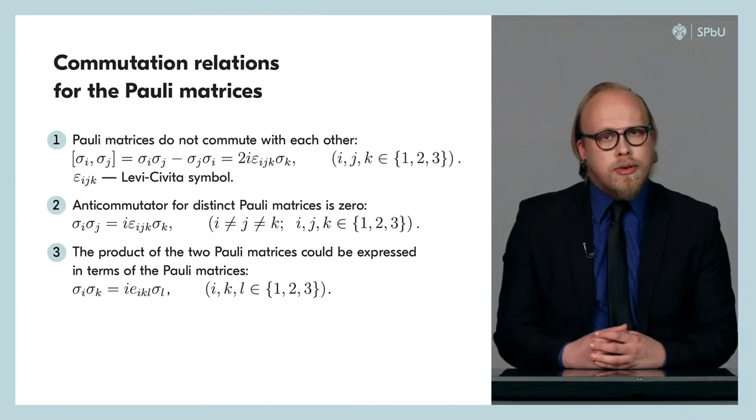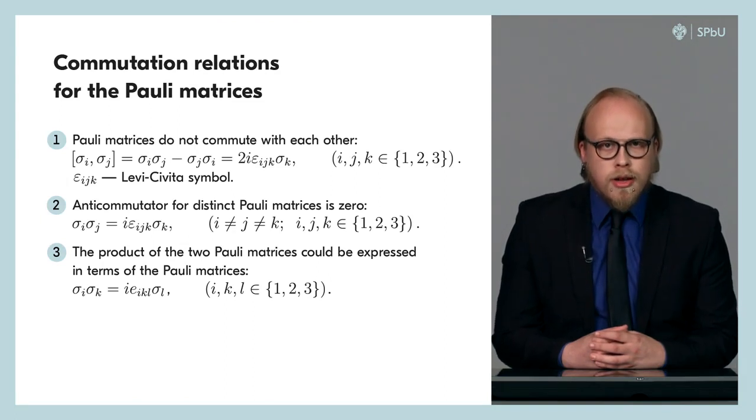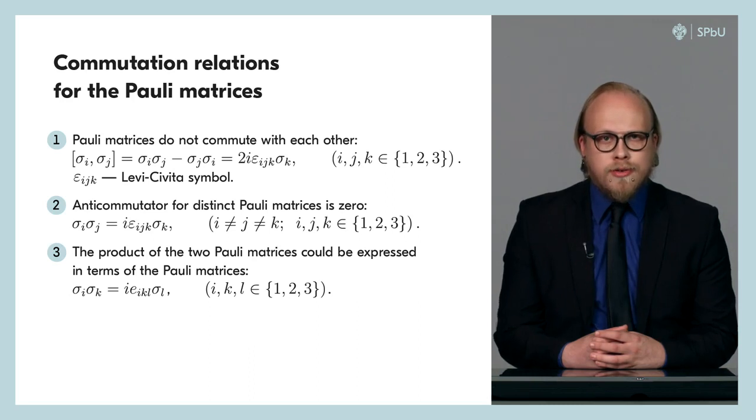In addition to the properties of each Pauli matrix, their commutation properties in the context of quantum mechanics are also important. The first property: the Pauli matrices do not commute with each other. However, in the product of two Pauli matrices, one cannot simply change the order of the factors. The permutation for any two Pauli matrices could be expressed in terms of the third Pauli matrix multiplied by 2i and the Levi-Civita symbol.